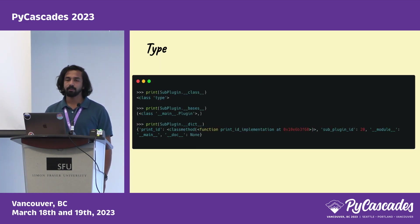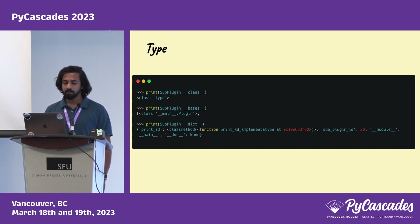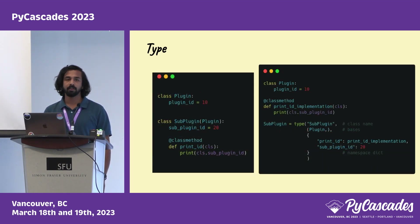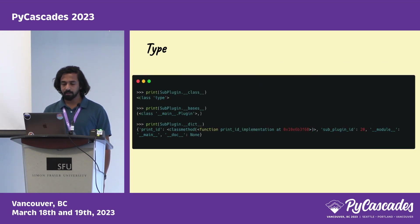Looking at the attributes of the class: printing __name__ returns the class type; __bases__ returns the base classes, which is the plugin class; and __dict__ is the namespace dictionary containing the print_id method, the subplugin_id attribute, and some other special variables populated by Python.